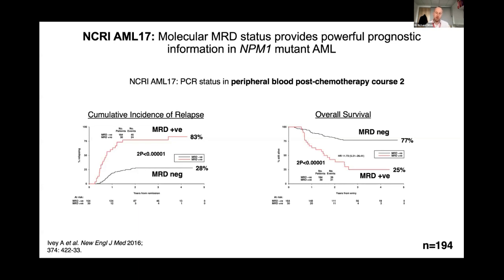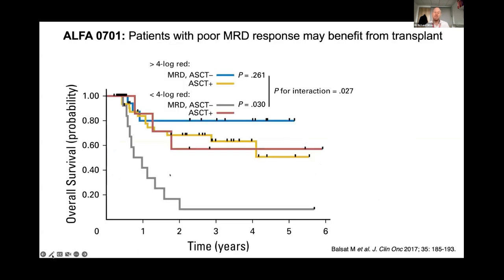It ought to be possible to pick those patients up by applying sequential MRD monitoring. As a rule, these patients are not selected for transplant and are given consolidation chemotherapy. The French ALFA study also showed that MRD status after two courses of chemotherapy is prognostically extremely informative. They defined MRD negativity as a four log reduction in the peripheral blood rather than positive versus negative — so you can see how different MRD metrics are becoming important.